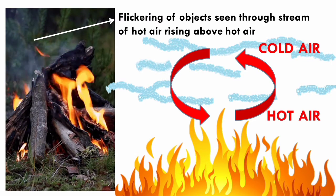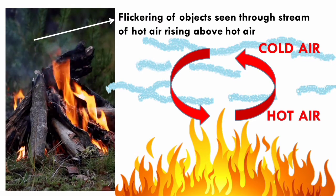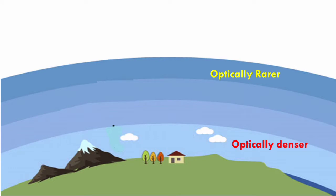We have to understand that under normal circumstances, air in the upper atmosphere is optically rarer and as we come down, the air in the lower atmosphere is optically denser. Thus, we can consider that our atmosphere consists of a large number of air layers having different optical densities.